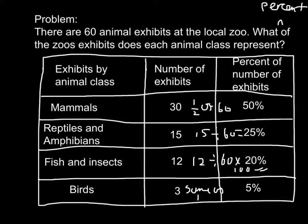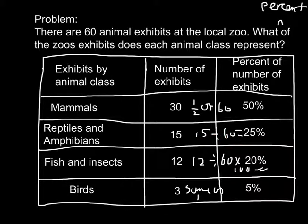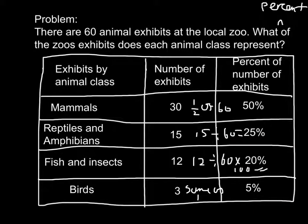For the reptiles and amphibians, we have 15 of them and 25%. You may be wondering how I found out 25%. What you do is 15 divided by 60, times 100, which equals 25%.